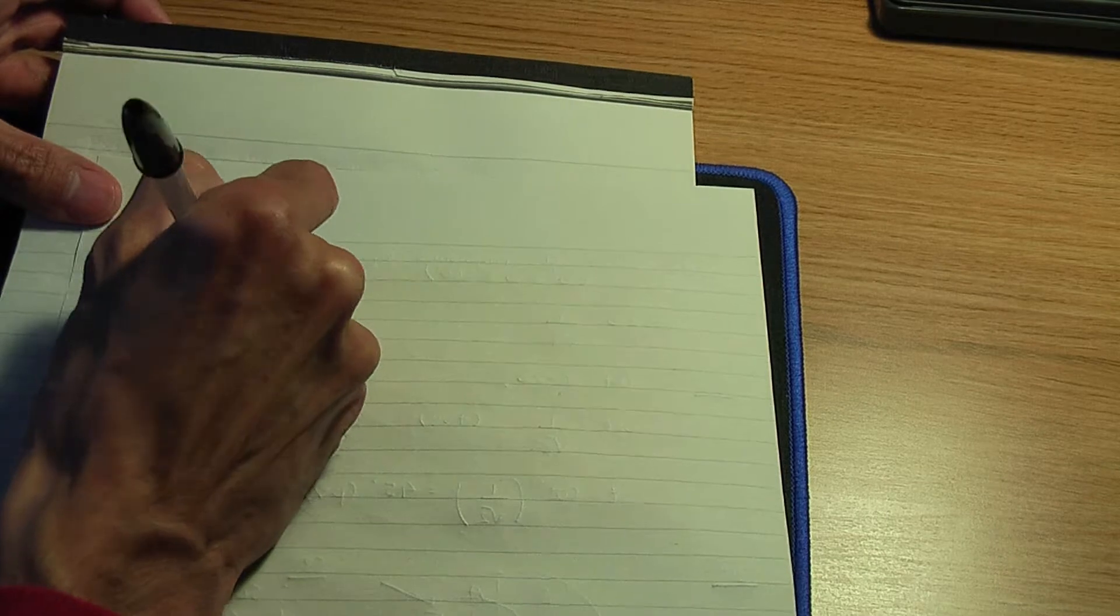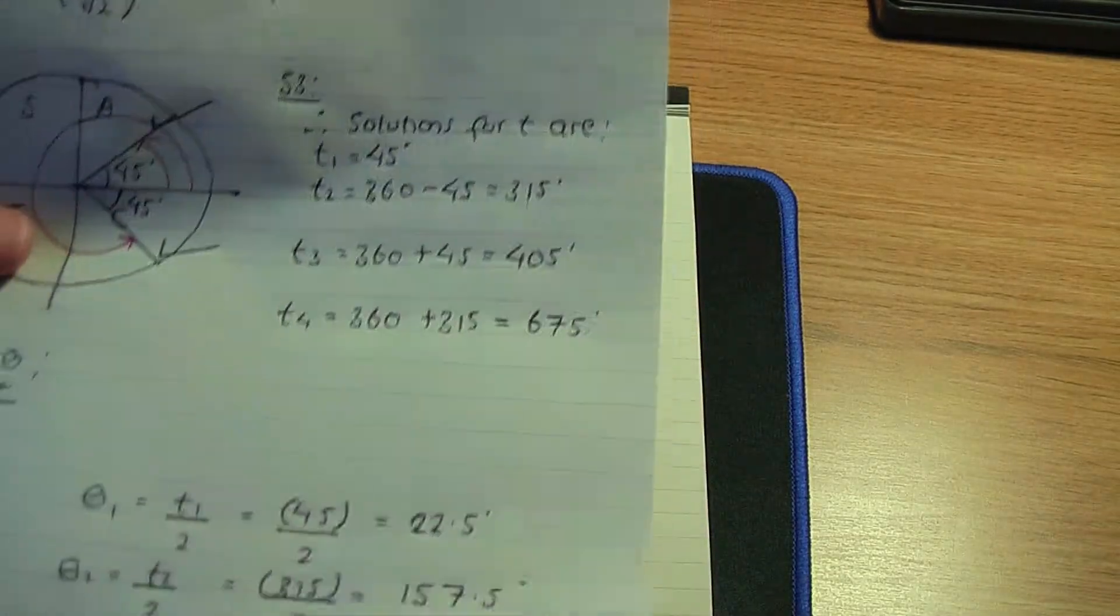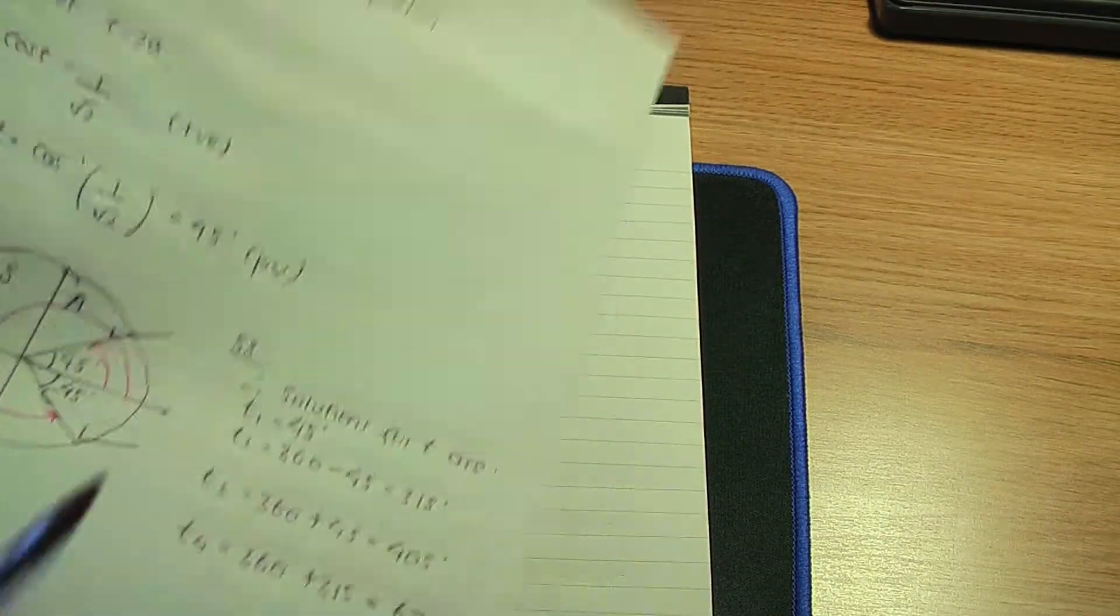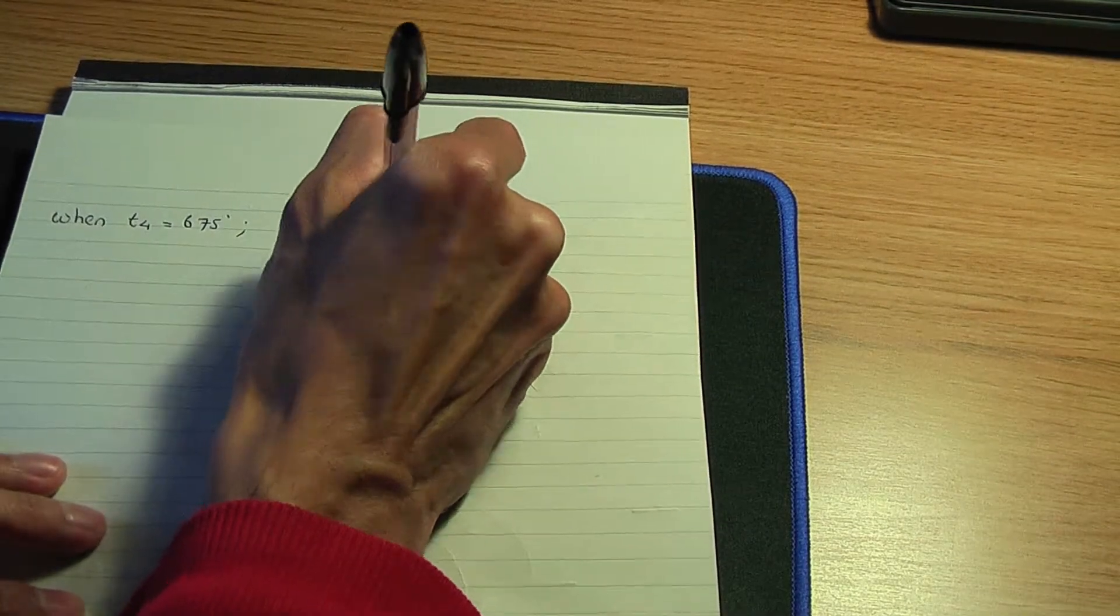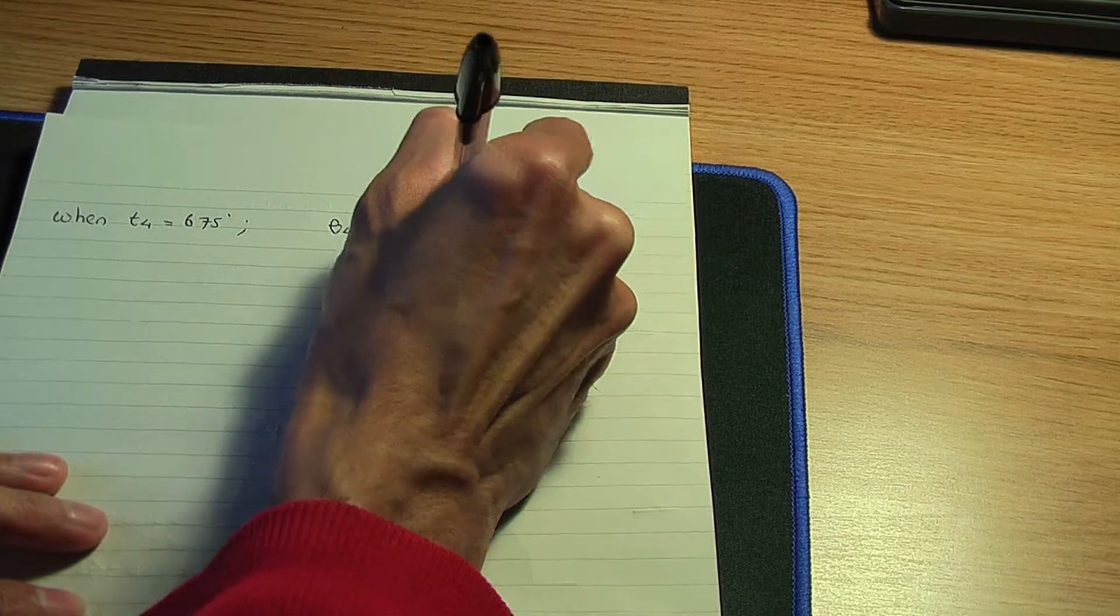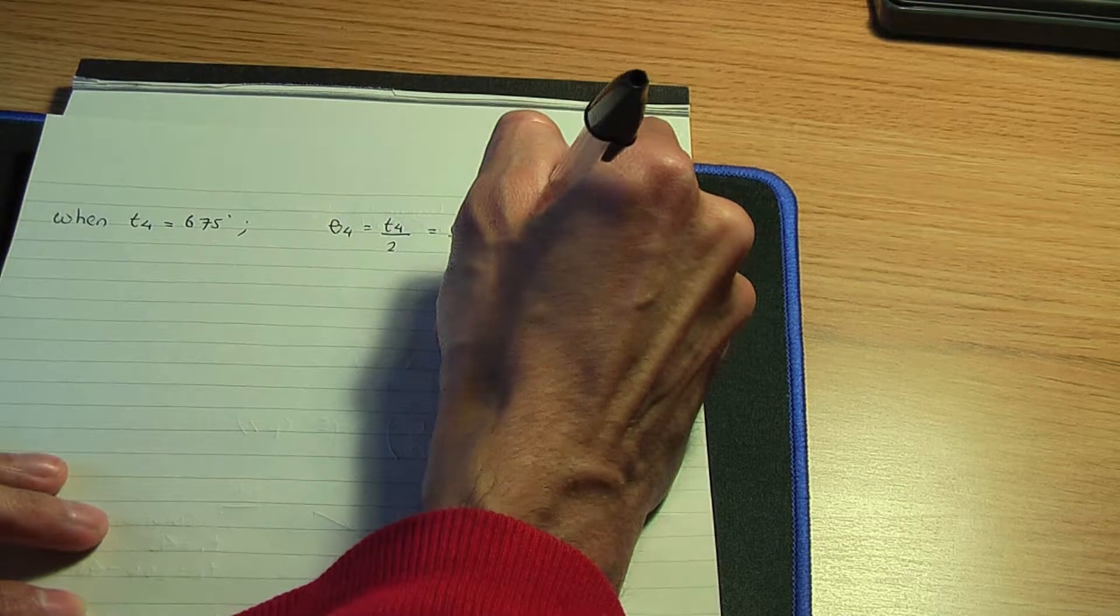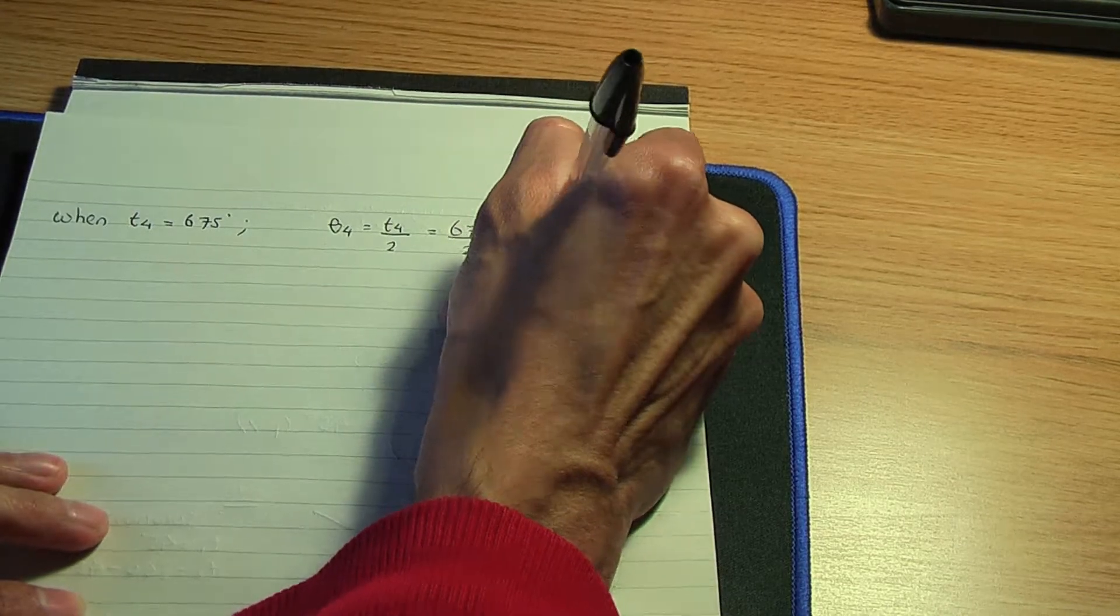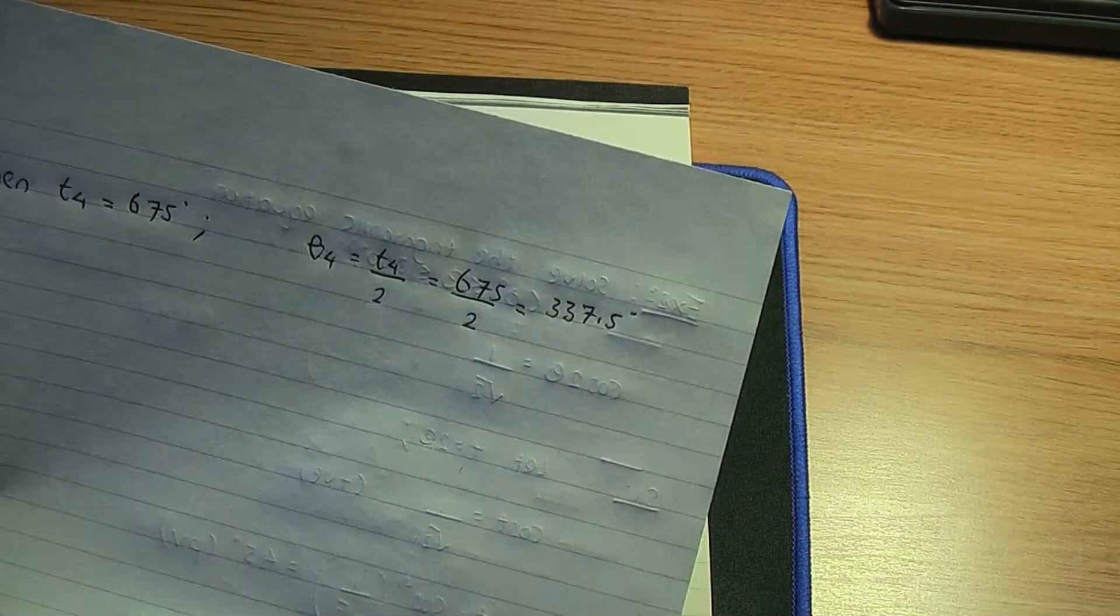Let me go to the other side of the page. So when t4 was 675, I believe, let's have a quick double check. Yes, it is 675. So θ4 will be t4/2, so 675/2, so that being 337.5. That is the last solution for theta.